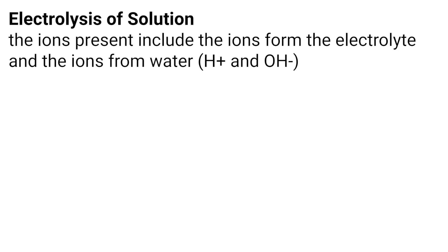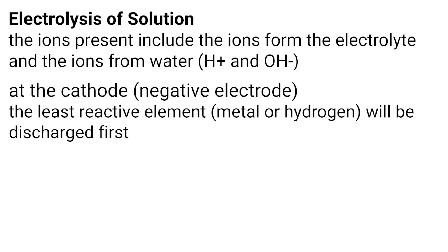During electrolysis of solution, not only are there ions present from the compound we're trying to break apart, but there are also other ions present — H+ and OH- from water. At the cathode, the least reactive element will be discharged, and this is either hydrogen or a metal. As most metals are more reactive than hydrogen, normally hydrogen is what is produced. However, if a metal like copper is present, then it will be discharged, as it is less reactive than hydrogen.